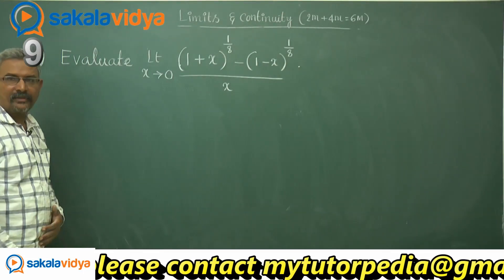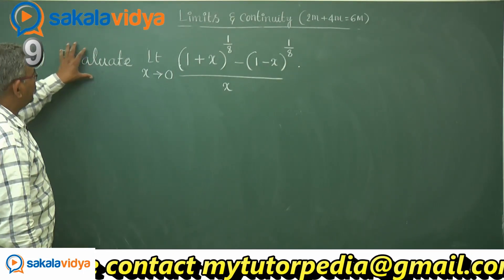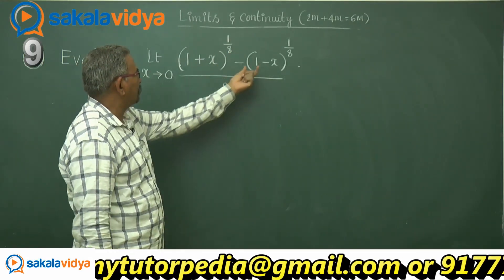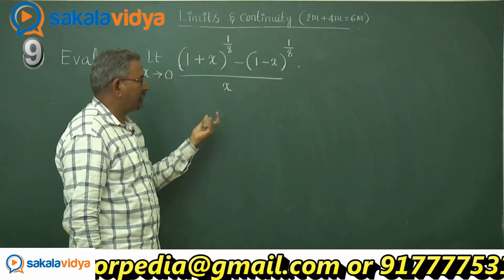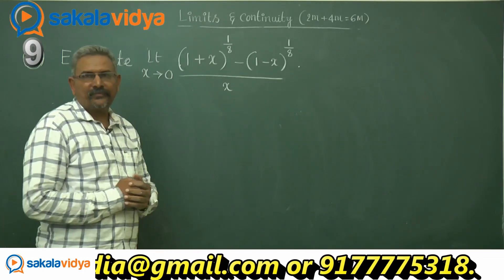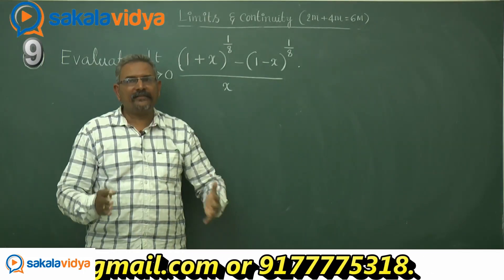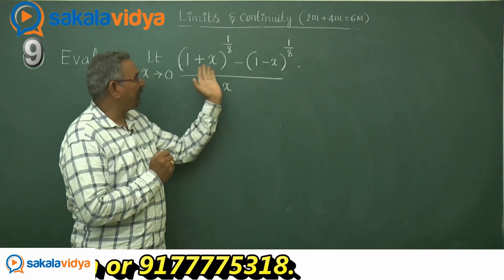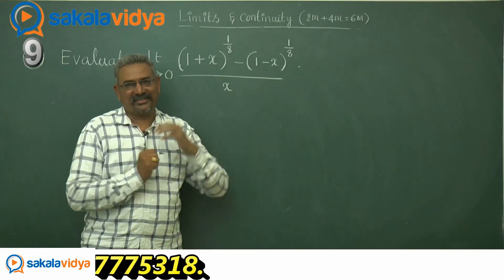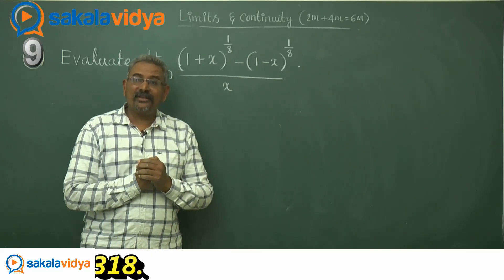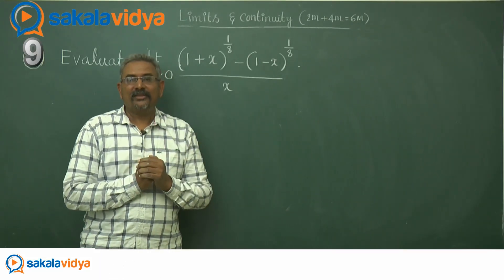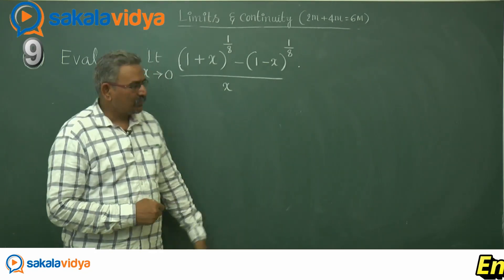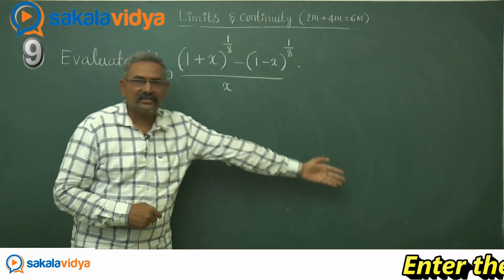Let us solve the next problem. Evaluate limit x tends to 0, (1+x)^(1/8) minus (1-x)^(1/8), upon x. For a competitive entrance examination, we can easily expect the answer: 1/8 plus 1/8 equals 2/8, which is 1/4. But for an academic examination, we should not write the direct answer. We need to prove this as 1/4.